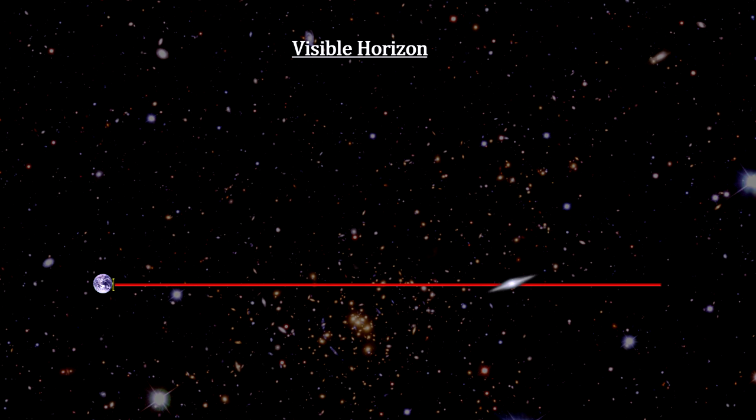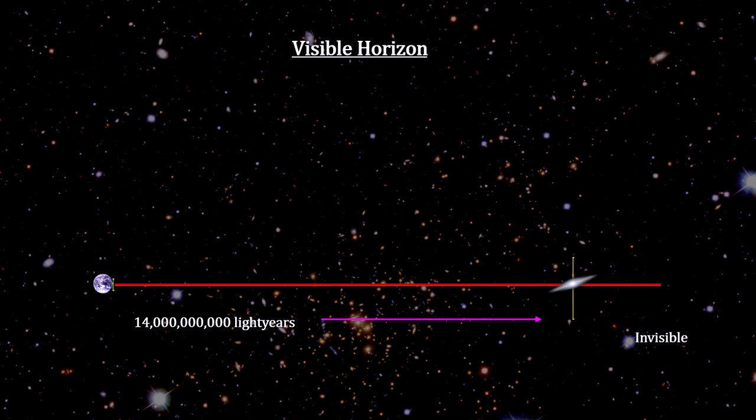Note that if a galaxy is far enough away, its apparent velocity will be faster than the speed of light, and its light would never reach us. It would be beyond the physical visible horizon for the universe. It's not that it is moving through space that fast—it's just that more space is being created per second between us and them than light can traverse in one second.